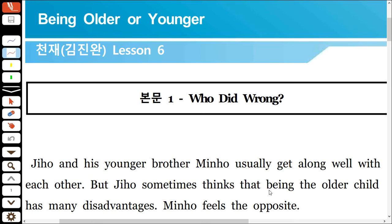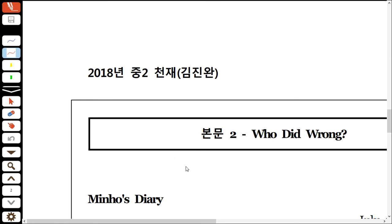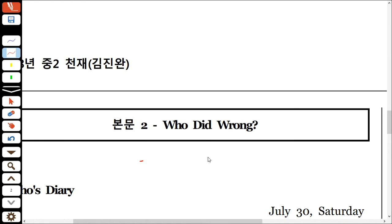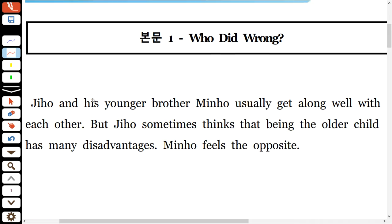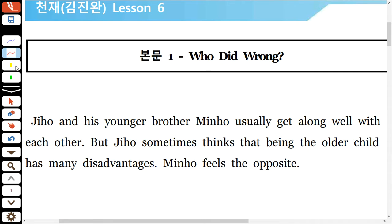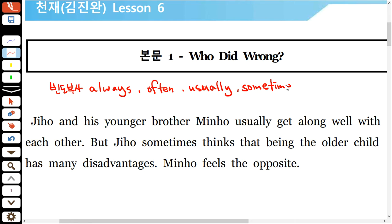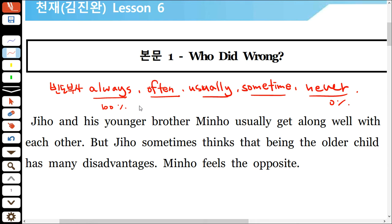빠른 해석 준비가 안 됐으면 다시 뒤로 가서 연습을 하고 수업을 들으세요. 6권에는 빈도부사가 나오는데, 빈도를 나타내는 부사로 always, often, usually, sometimes, never가 있어요. 뜻은 항상, 자주, 보통, 때때로, 결코 ~이 아닌. 100%에서 0%까지 빈도가 낮아지는데, 위치가 시험에 나올 수 있어요.